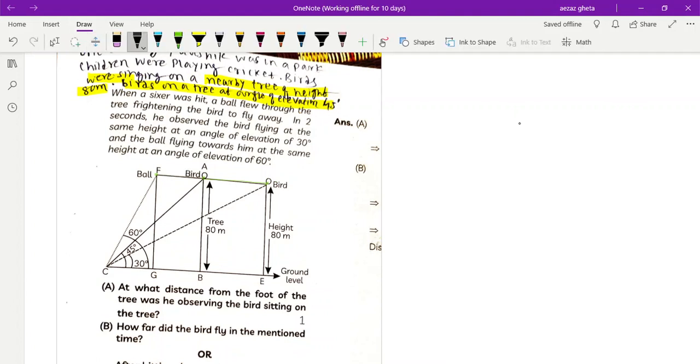At what distance from the foot of the tree was he observing the bird sitting on the tree? You can consider this triangle ABC and that angle is 45. Tan 45 equals opposite side by adjacent side. 80 meters is the height of the tree and distance BC. Cross multiplication gives 80 meters. The answer is 80 meters.